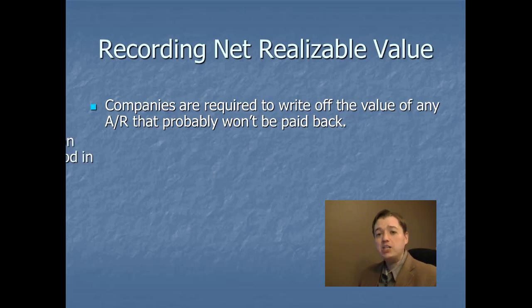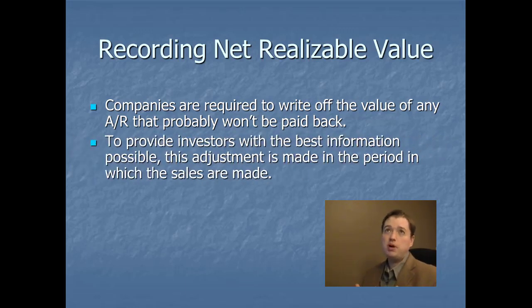Now, according to GAP, the best way that we can do this, or perhaps best isn't the right word, the most effective way to do this as far as telling our investors what's really going on, is to make these adjustments during the period of the sale. So, if I sell a million dollars worth of equipment on credit this period, and I think I'm only going to collect $800,000 of that, then I need to show $800,000 on my books, not the full $1 million.